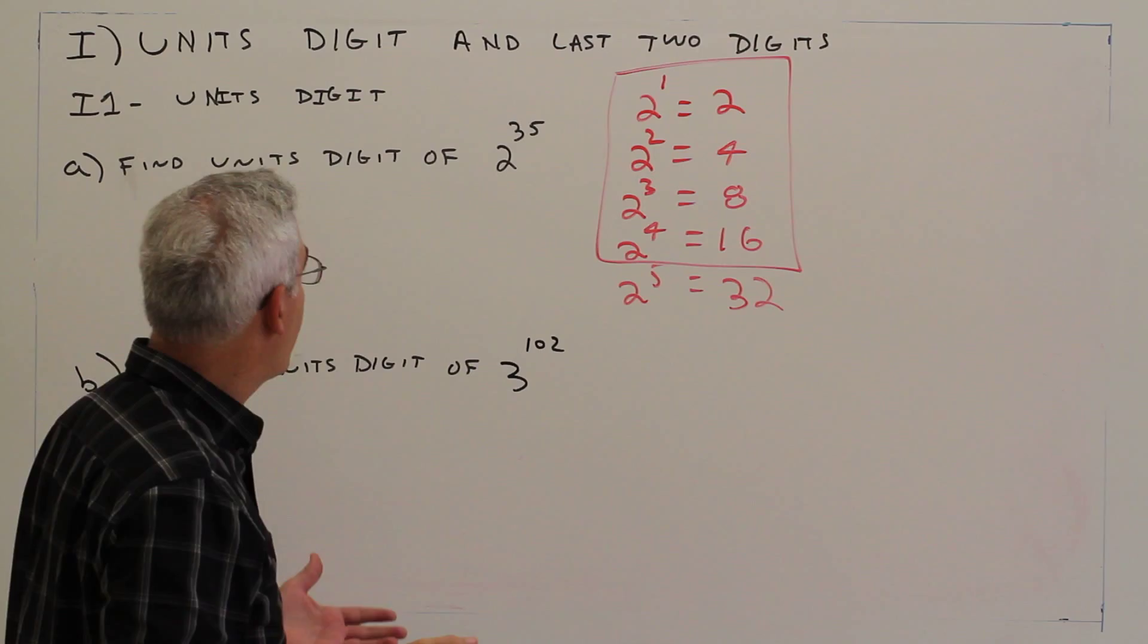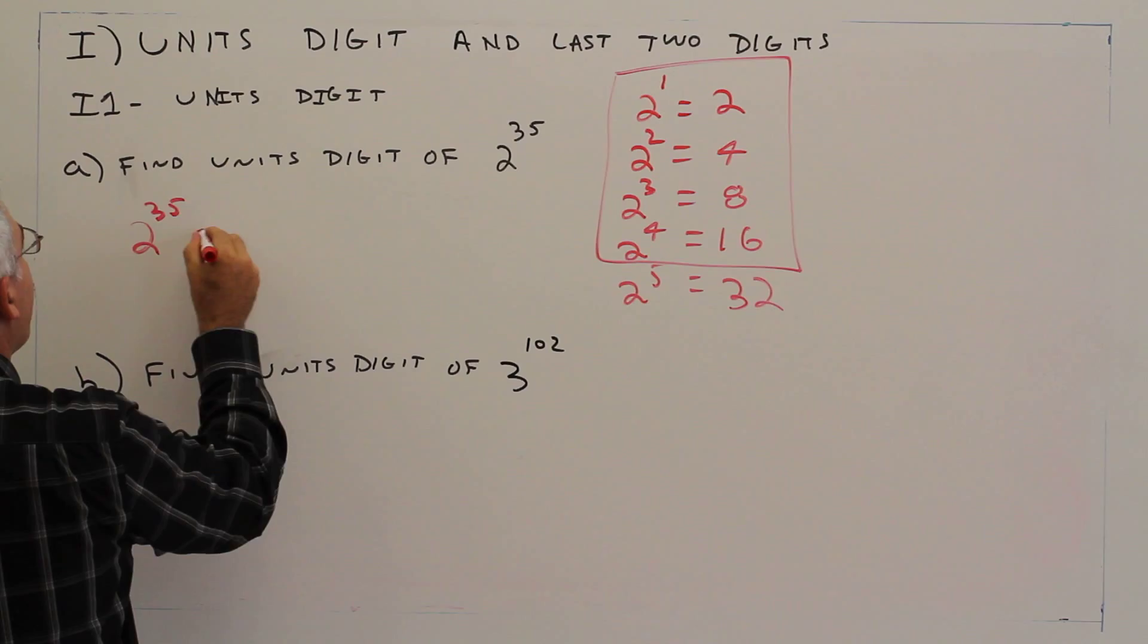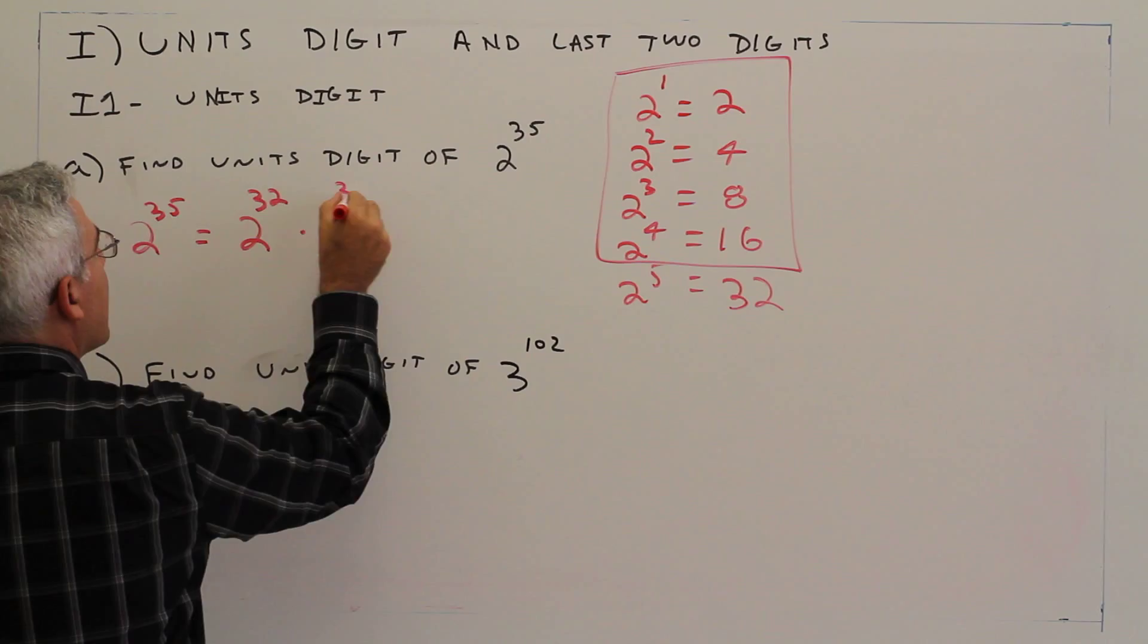So what I do, there's two different ways of doing this. So you could do it this way. 2 to the 35th is the same as 2 to the 32nd times 2 cubed.